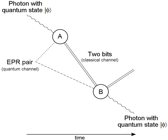Quantum repeaters allow entanglement to be established at distant nodes without physically sending an entangled qubit the entire distance. In this case, the quantum network consists of many short-distance links of perhaps tens or hundreds of kilometers. In the simplest case of a single repeater, two pairs of entangled qubits are established: a pair (r_a, a) located at the sender and the repeater, and a second pair (r_b, b) located at the repeater and the receiver. These initial entangled qubits can be easily created, for example through parametric down conversion, with one qubit physically transmitted to an adjacent node.